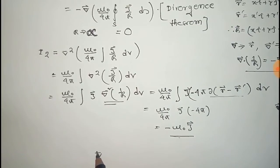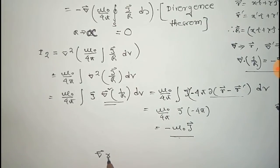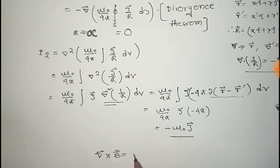This is the value of I2. Since I1 = 0 and I2 = −μ₀ J-vector, the result is I1 − I2 = μ₀ J-vector. So the curl of the magnetic field B is given by μ₀ J-vector: curl of B equals μ₀ J.